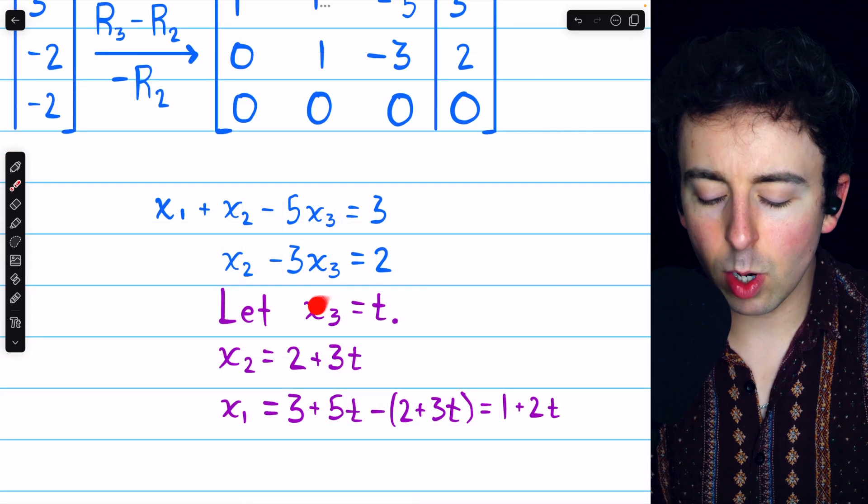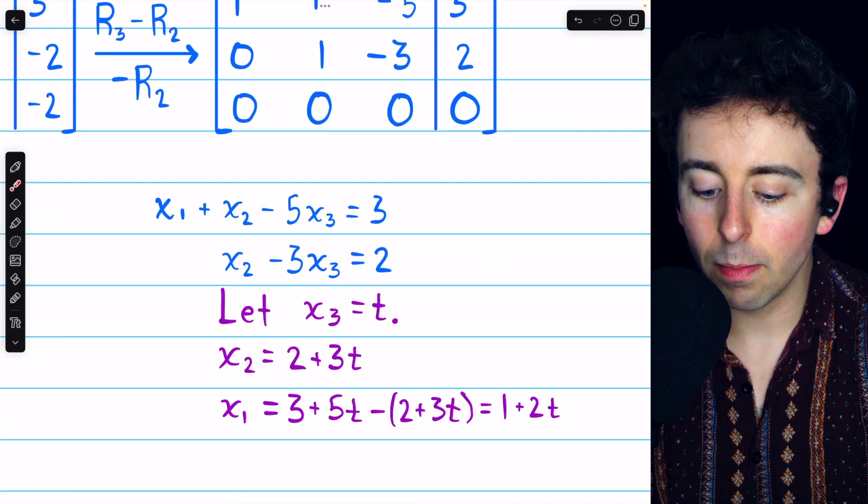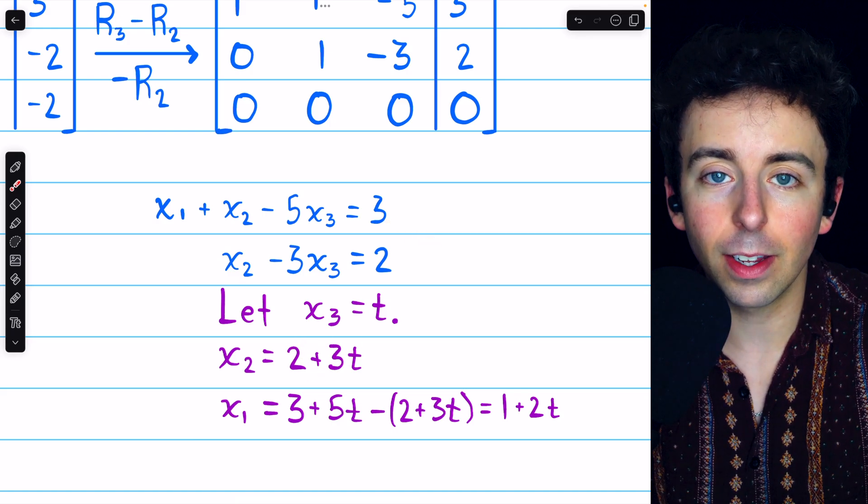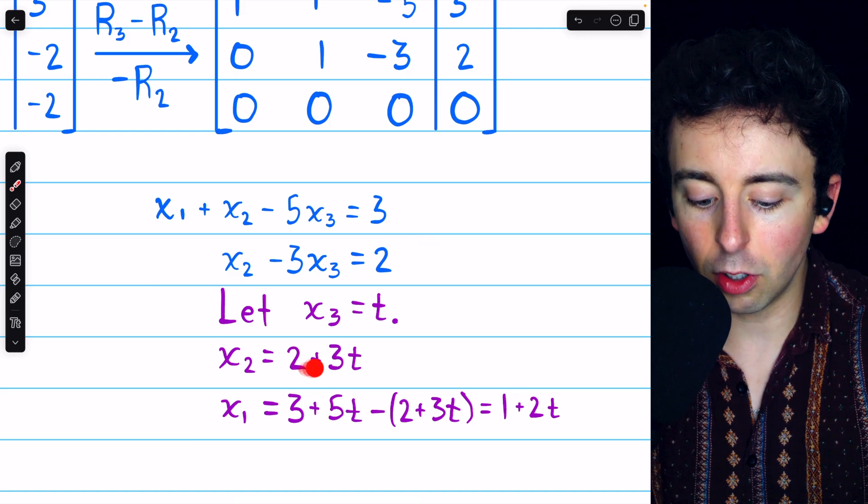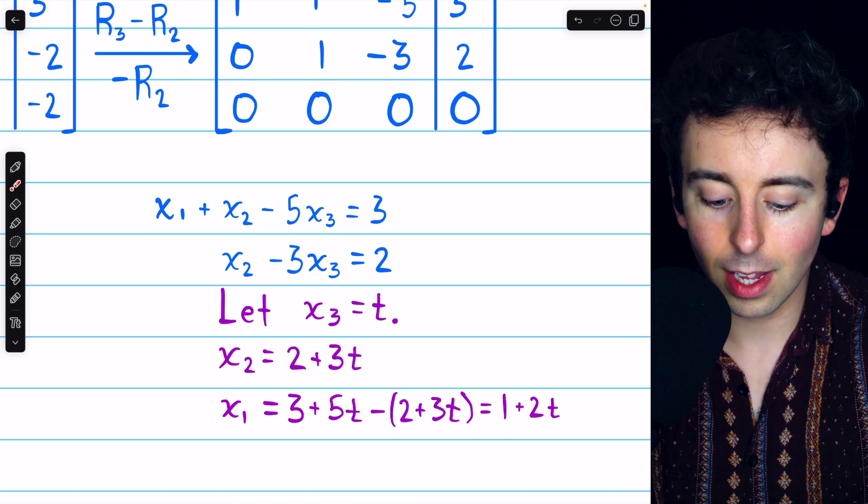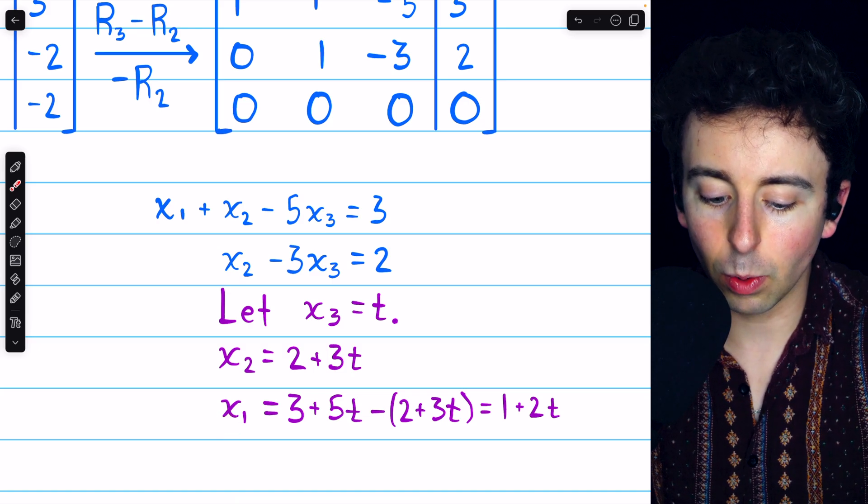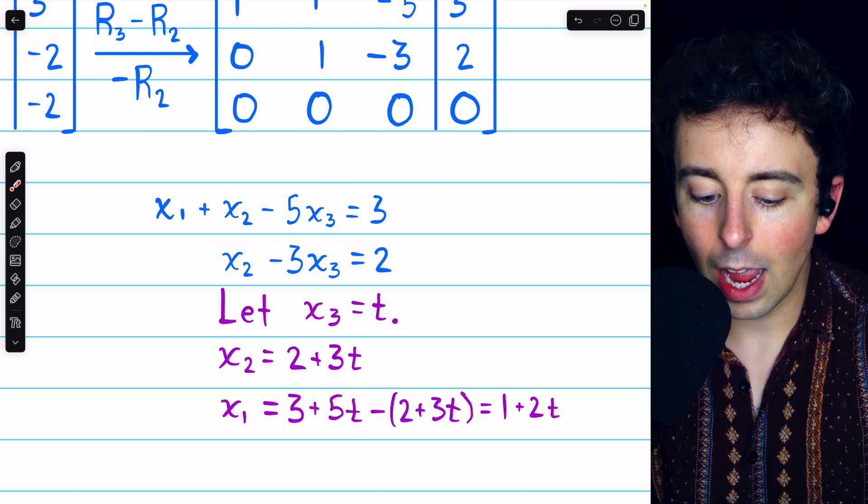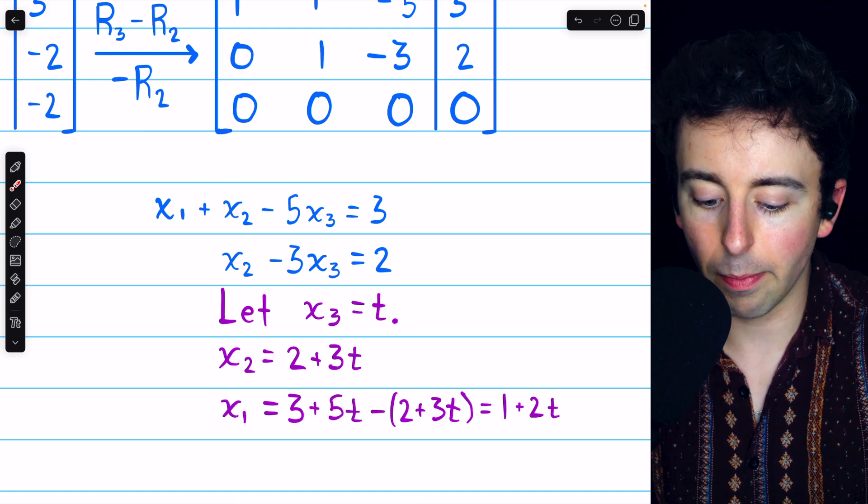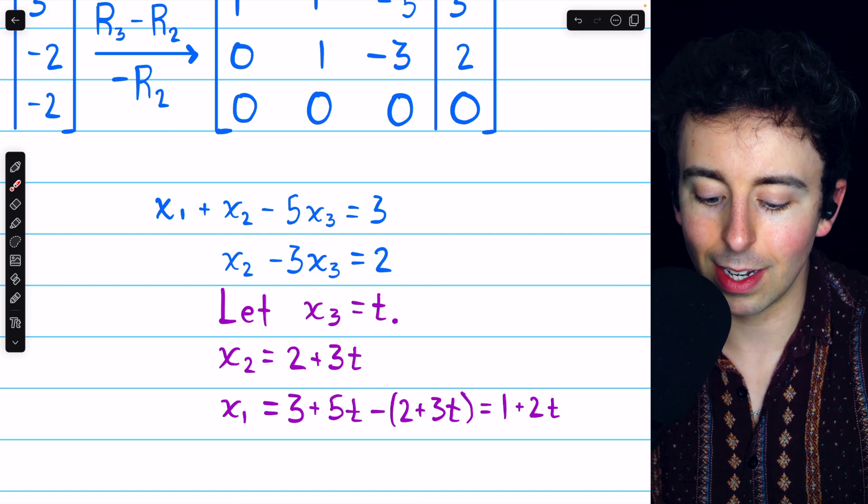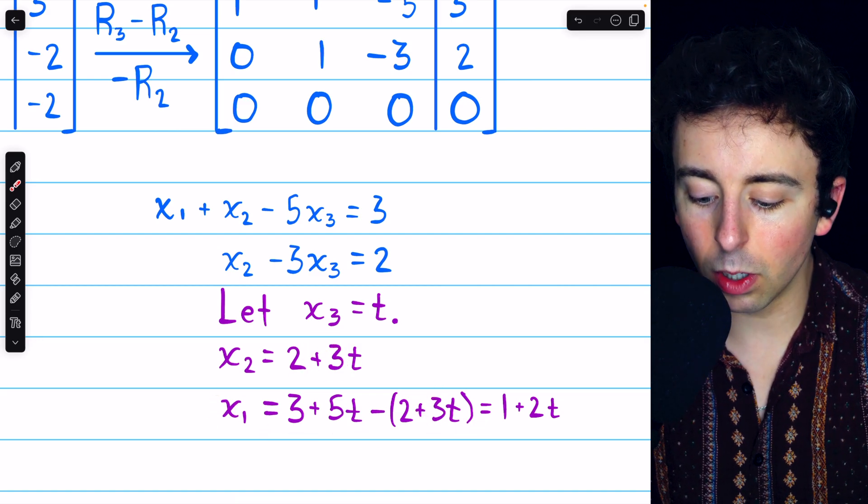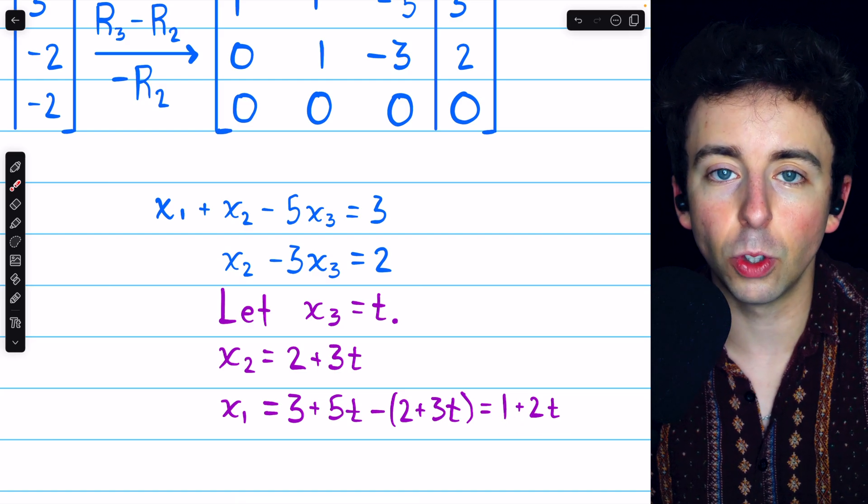Now, if x3 equals t, then x2 must equal 2 plus 3 times t. If x2 equals 2 plus 3 times t, then x1 must equal this. This is 3 plus 5t, and then minus x2, so minus 2 plus 3t. We can then combine like terms to have that x1 equals 1 plus 2t.